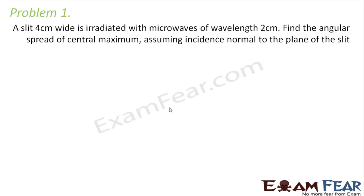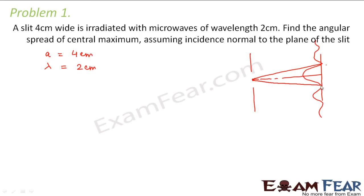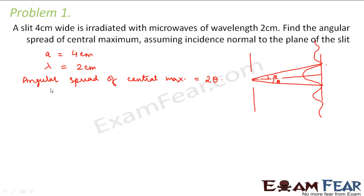It says that a slit 4 cm wide is irradiated with microwaves of wavelength 2 cm. So the width of the slit is equal to 4 cm and the wavelength is equal to 2 cm. Find the angular spread of central maxima assuming incidence normal to the plane of the slit. This is my central maxima and then the alternate bright and dark fringes. We have to calculate the angular spread of the central maximum, which we call 2 theta.